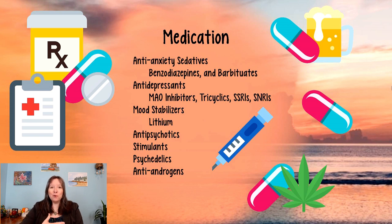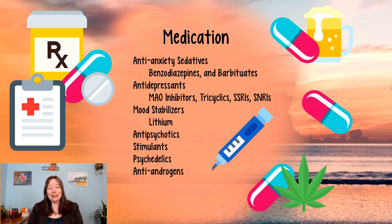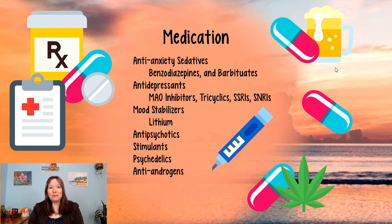Anti-androgens reduce androgen hormones like testosterone and can be beneficial for sex disorders, paraphilias, and antisocial personality disorder by lowering competitive dominance. There are ethical concerns around their use and patient consent. It's also important to understand that many people try to self-medicate with alcohol or cannabis. Alcohol can be used like an anti-anxiety sedative — numbing the brain — but like benzodiazepines, it can be highly addictive with extreme withdrawal effects. Cannabis, especially CBD, is sometimes used for anxiety, but you should always speak with your healthcare provider if using it for medical purposes.